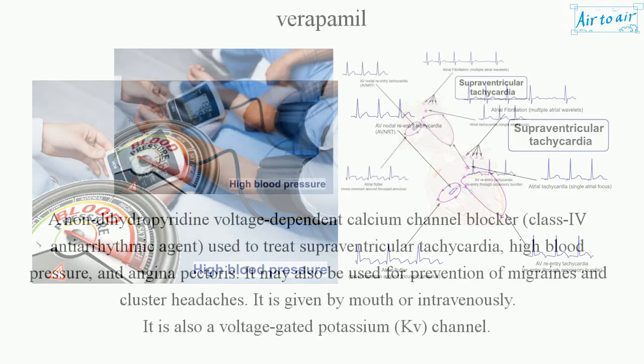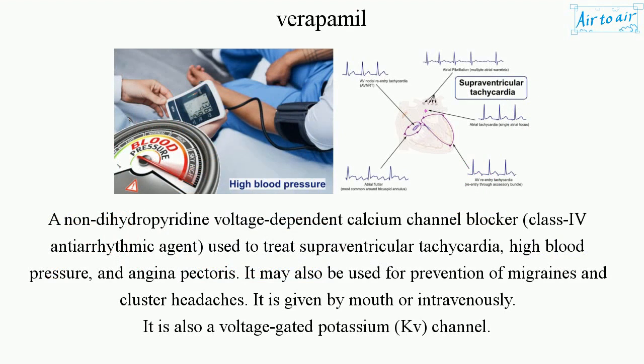Verapamil is a non-dihydropyridine voltage-dependent calcium channel blocker and class IV antiarrhythmic agent, used to treat supraventricular tachycardia, high blood pressure, and angina pectoris. It may also be used for prevention of migraines and cluster headaches. It is given by mouth or intravenously.